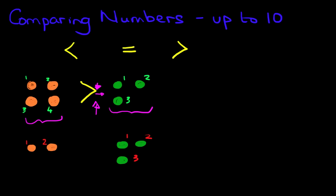So the symbol we look at — which one do you think goes here? Remember, it has to point to the smaller number. Which is the smaller number? It's over here — it's two oranges. So it goes like this, pointing to the smaller number. Two oranges is less than three apples.